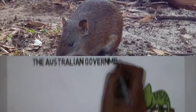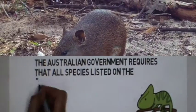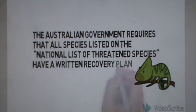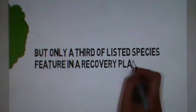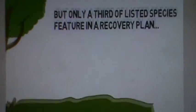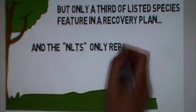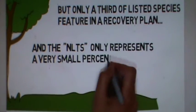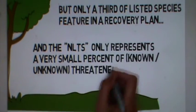The Australian government requires that all listed species have a written recovery plan, but in reality only a third feature a single or multi-species recovery plan. Even more species have been left off the list and remain unknown or unprotected.